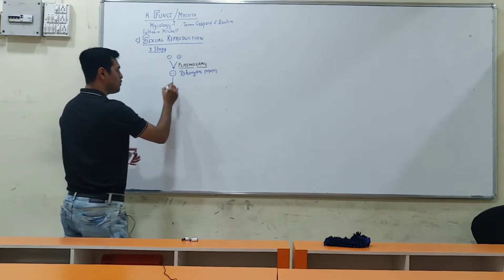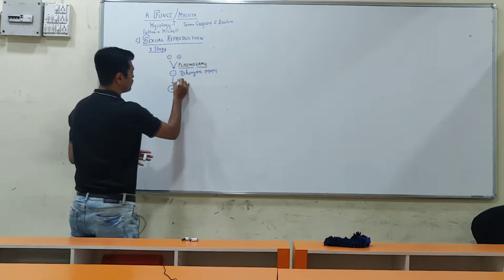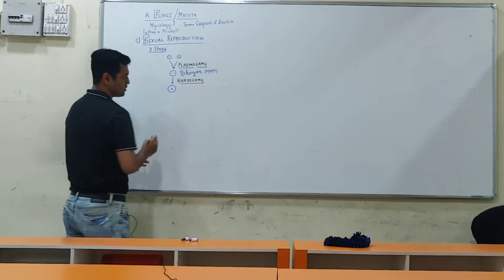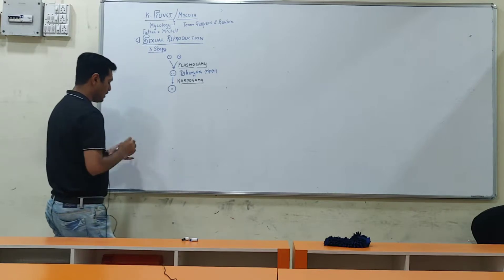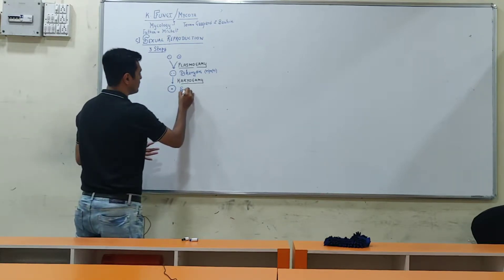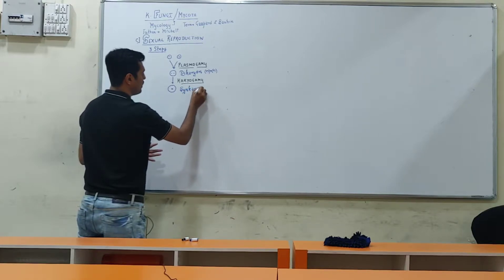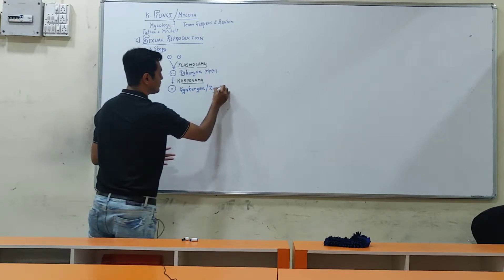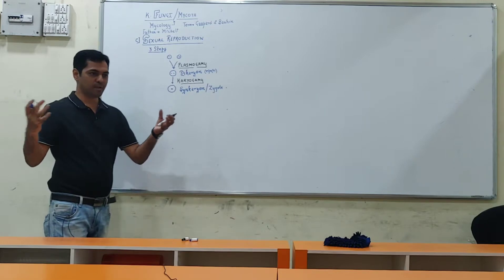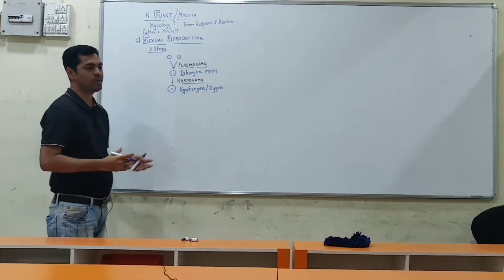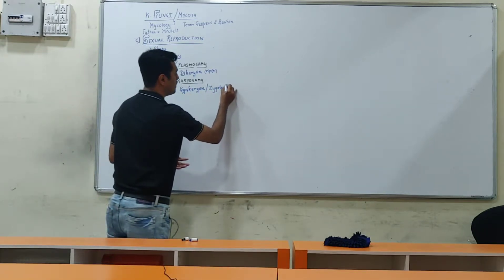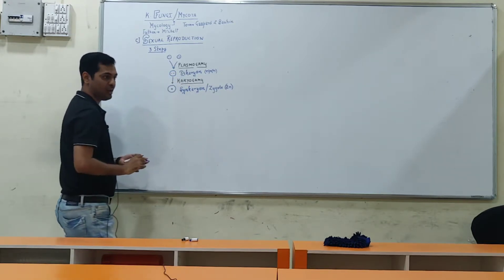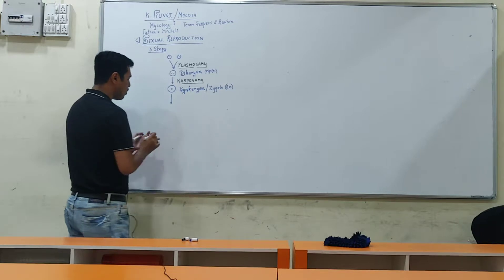Then, in the next stage, nucleus fusion will occur in this cell. The second step is known as Karyogamy — that is, the fusion of nuclei. Since the nuclei have now fused, this cell is called a synkaryon. The synkaryon can also be known as a zygote — just as in human reproduction when haploid male and female gamete nuclei combine, we call it a zygote.